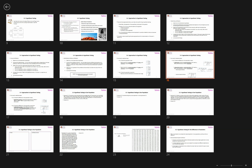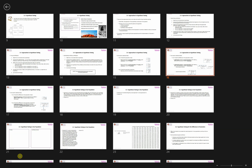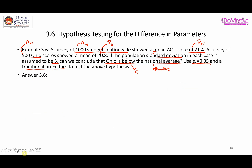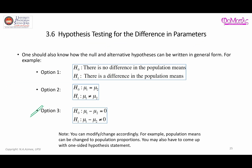The first step is to write down the null hypothesis and the alternative hypothesis. The alternative statement is that mu for Ohio is less than mu for nationwide — that is what you can translate from the question. Because of that, the null hypothesis will be mu Ohio greater than or equal to mu nationwide.